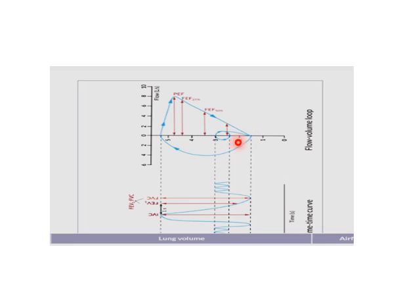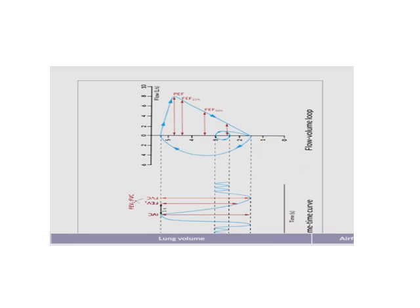This loop represents the breathing pattern — inhalation followed by exhalation — during tidal breathing. This is shown here to compare the two approaches: this is the forced vital capacity test. The peak expiratory flow is represented by the slope of this curve, and this shows the volume of air expired at different times.